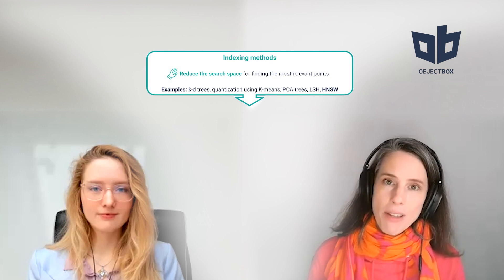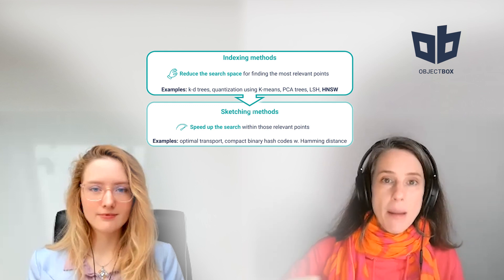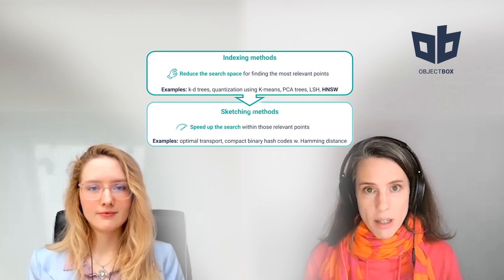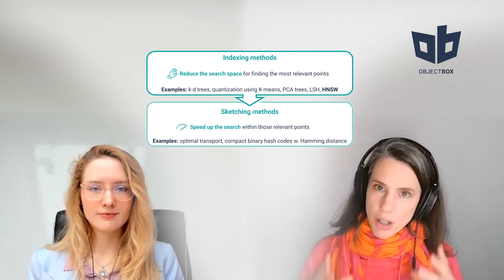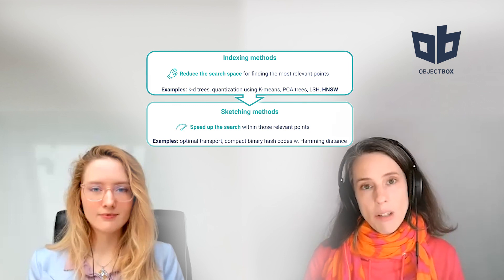However, some dimensions of the data are more important than others, and that's what ANN search algorithms use. There are two main types of ANN approaches. The first one is indexing methods, which reduce the search space. The second one is sketching methods, which speed up the search within the reduced space. Together, they provide a very efficient and fast approach to approximate nearest neighbor search.